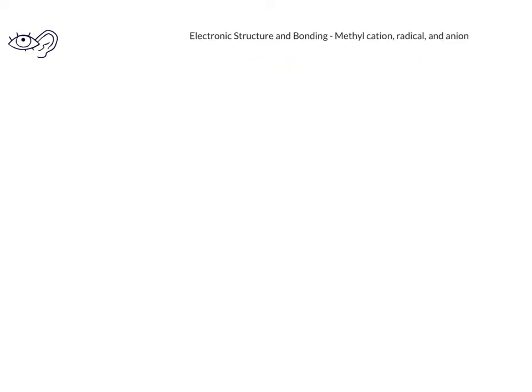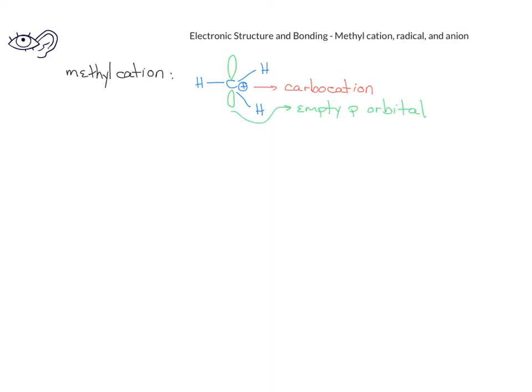Now that we've introduced some of the concepts that you should recall from general chemistry, we can apply some of those concepts to some new species that you'll see in organic chemistry. Specifically, we'll look at the methyl cation, the methyl radical, and the methyl anion. If you recall your Lewis structures, you may think that carbon generally has four bonds, and you'd be correct. However, with the methyl cation, we see that the carbon is actually bonded to only three hydrogens. Since it's called a cation, we also know that it has an overall positive charge. We call carbons that have a positive charge a carbocation. We also want to remember that since the carbon only has three atoms attached to it, it also has an empty p orbital.